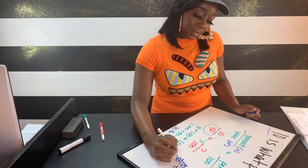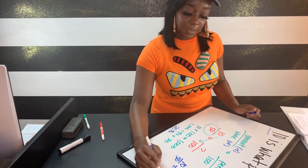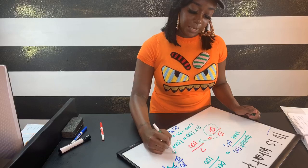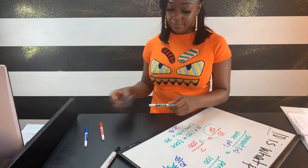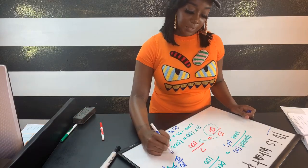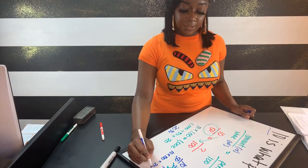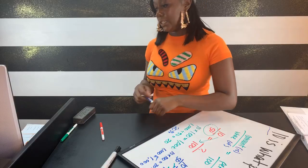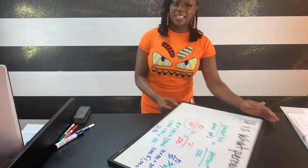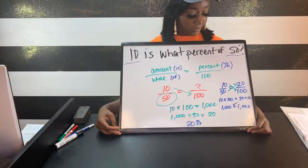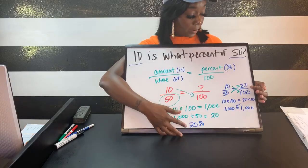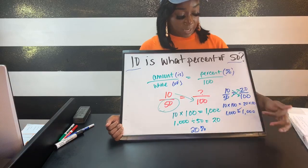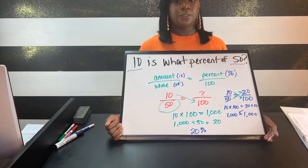We plug 20 back in: 10 over 50 equals 20 over 100. Cross multiply top to bottom on both sides: 10 times 100 equals 1,000, and 20 times 50 also equals 1,000. Since both sides are equal, the answer is correct. Checking answers in math is always good practice — it confirms you haven't made a mistake.